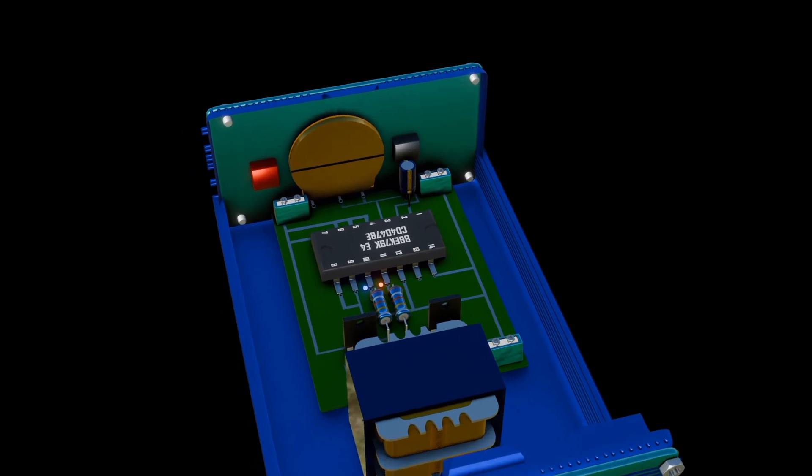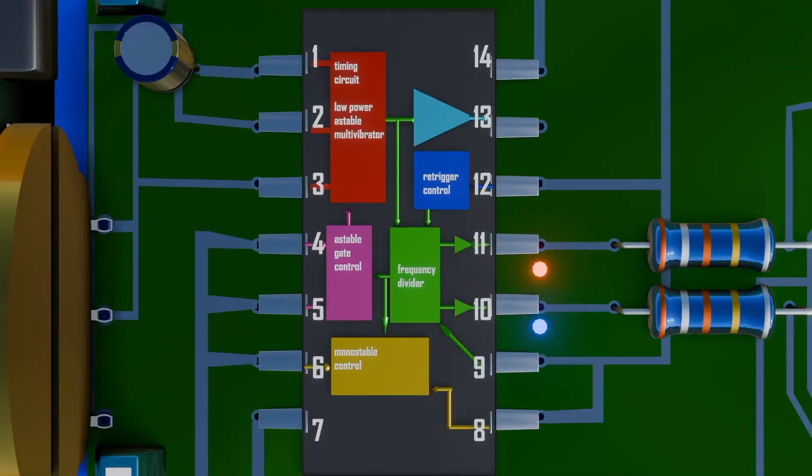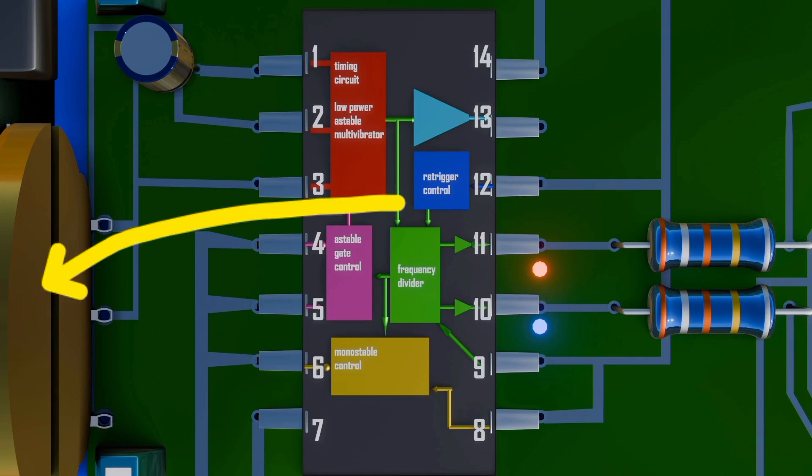CD4047 has 14 terminal pins. It has the ability to operate in both astable and monostable mode. It has to be connected to external resistor and capacitor. In astable mode, it operates by charging a capacitor using a variable resistor that is mainly used to adjust the frequency near 50 Hz. In monostable mode, an external resistor must be connected between pin 1 and 3 of the IC that helps in determining the output pulse width.